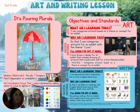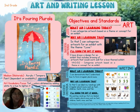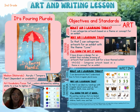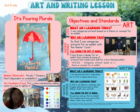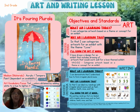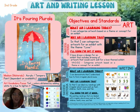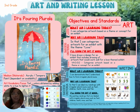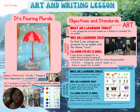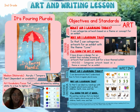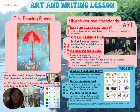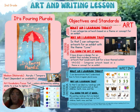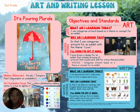For art, you're learning that you're going to be able to say: I can categorize artwork based on a theme or concept for an exhibit, so that I can categorize artwork for an exhibit. You'll know you've got it when you've drawn a design for an exhibit that includes the drawing of your artwork that could work well for a love-themed exhibit.